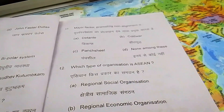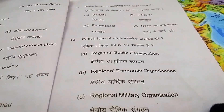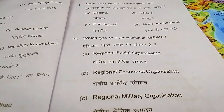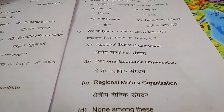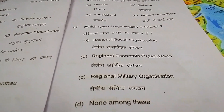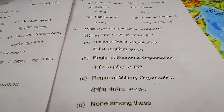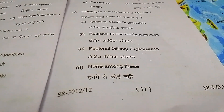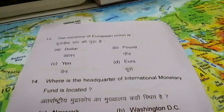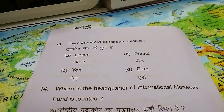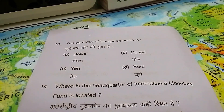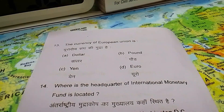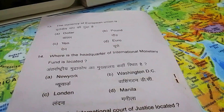Question 12 — which type of organization is ASEAN? A) it is a regional social organization, B) it is a regional economic organization, C) it is a regional military organization, D) none of the above. Question 13 — the currency of the European Union is: A) dollar, B) pound, C) yen, D) euro.